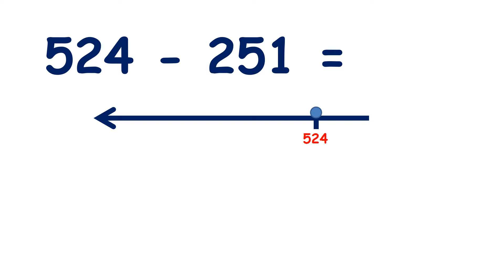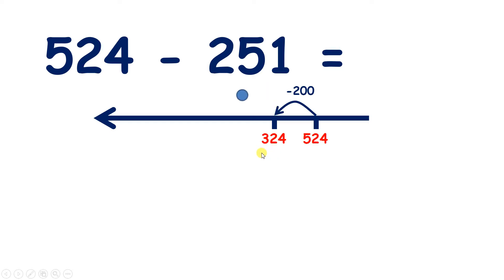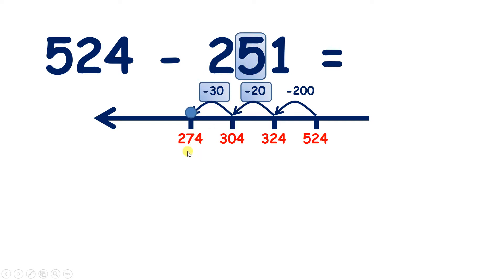Now pause the video and see if you can answer 524 subtract 251. So if we start by taking away our 200s, that leaves us with 324, because 5 minus 2 is 3. Now we need to subtract 5 tens, but rather than subtracting all 5 tens in one go, we can subtract our 2 tens to give us 304, and then subtract 3 more tens. So we have subtracted 5 tens altogether, and that leaves us on 274.